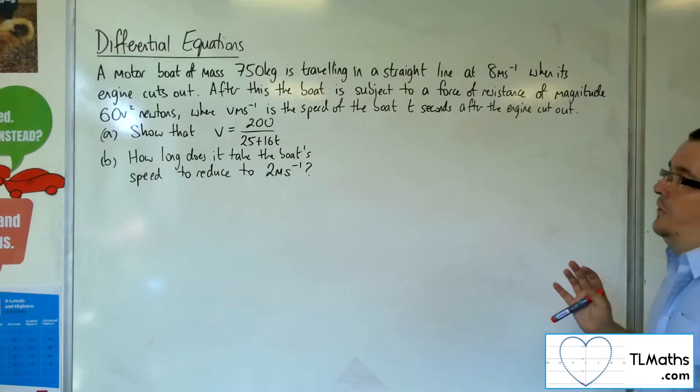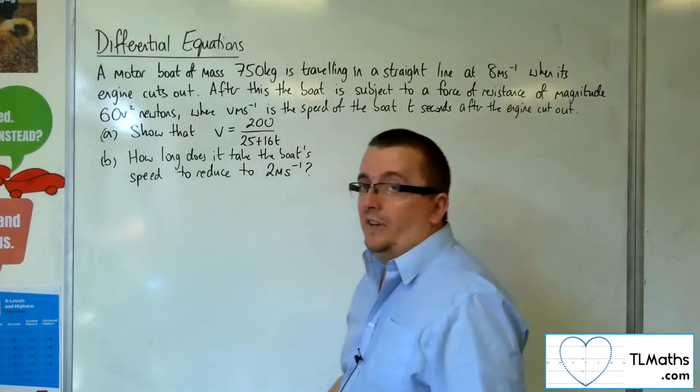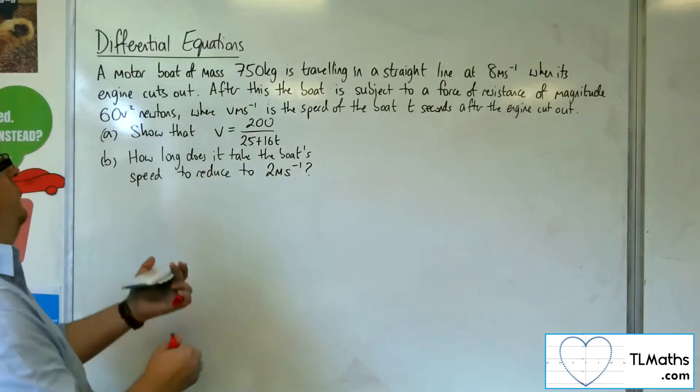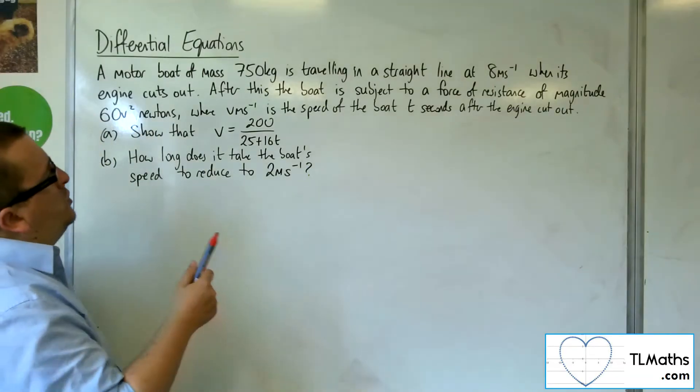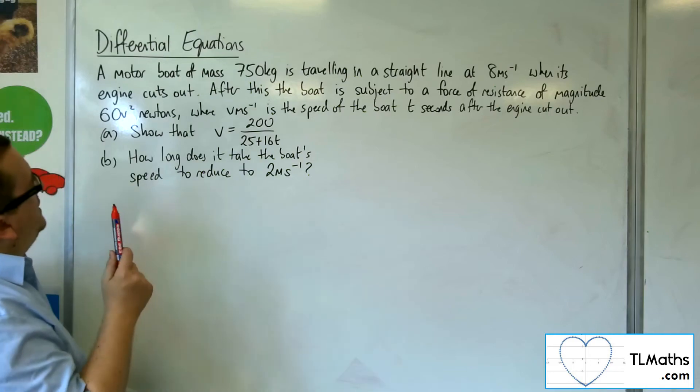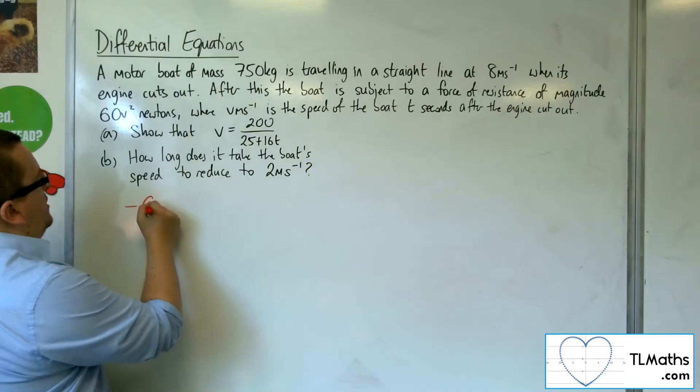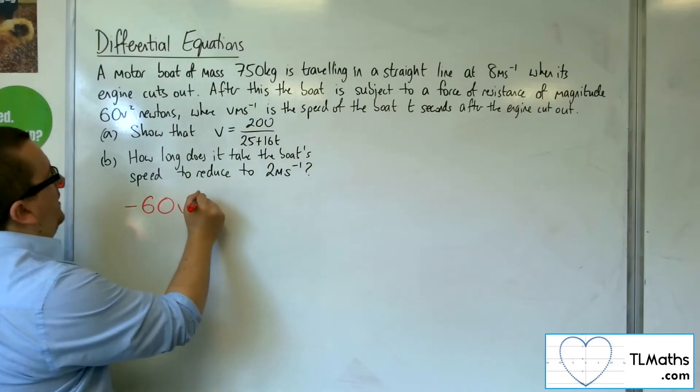Show that V is 200 over 25 plus 16T. So the boat is subject to a force of resistance of magnitude 60V squared newtons. When we're looking at F equals MA, we've just got that resistance force minus 60V squared.